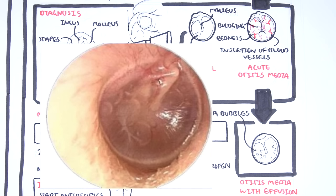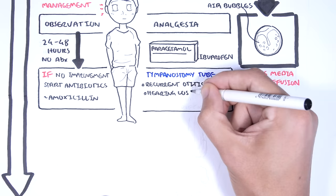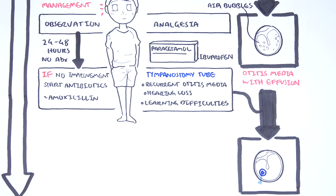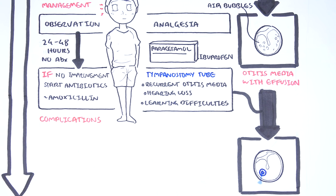Recurrent otitis media or persistent otitis media with effusion may require ventilation tubes, known as tympanostomy tubes, especially if the child has features of hearing loss, developmental delays, or learning difficulties. It is also important to follow up on the child after episodes of an acute otitis media and to tell the parents to return if symptoms worsen, as this could be signs of complications associated with acute otitis media.